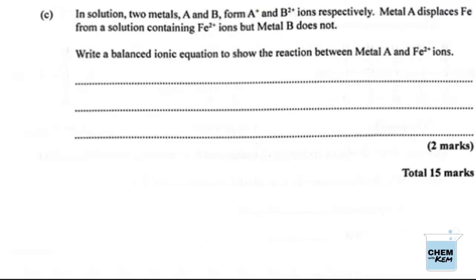So we're down to the last two in number 2 to make it up to 15. We have 13 so far. Part C: In solution, two metals A and B form A+ and B2+ ions respectively. So it means A forms A+ and B forms B2+. Metal A displaces Fe from a solution containing Fe2+ ions, but metal B does not. Write a balanced ionic equation to show the reaction between metal A and Fe2+. Kind of expecting something more like a reactivity series based on this, but this is where they stop it.